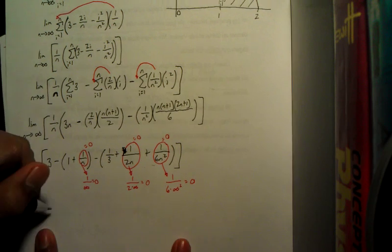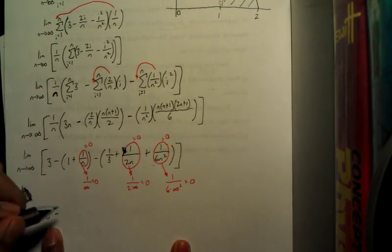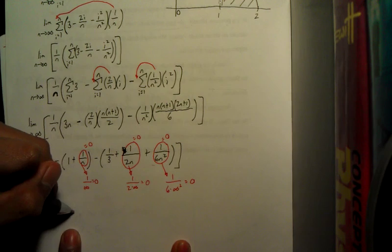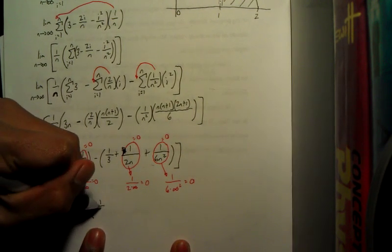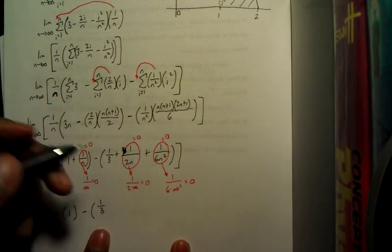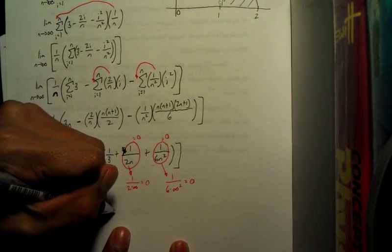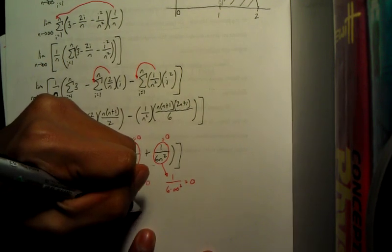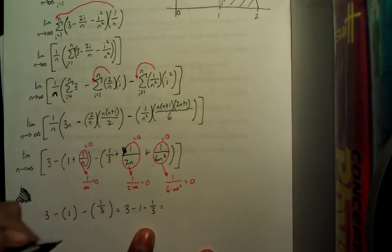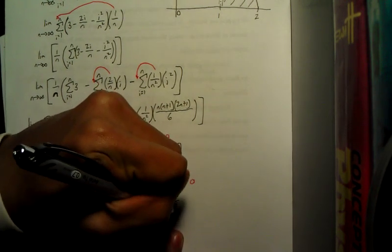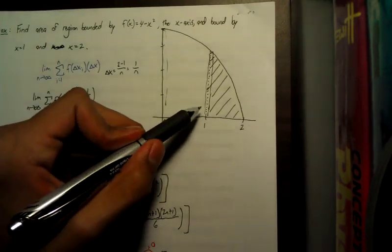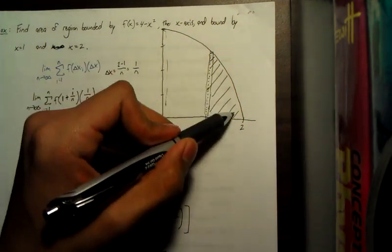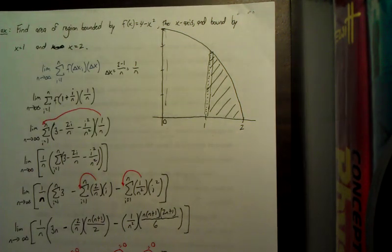So now that we took care of our limits, what we're left with is 3 minus 1 plus 0, so we don't need that. Minus 1 third plus 0 plus 0, so we don't need those. 3 minus 1 minus 1 third, and that equals 5 thirds. So that 5 thirds represents both the integral and the area under the curve from 1 to 2 of this function.